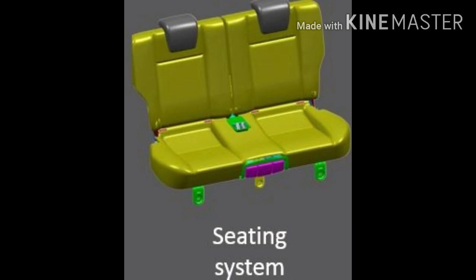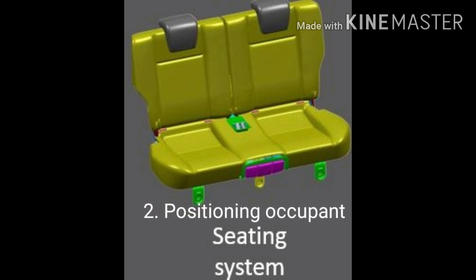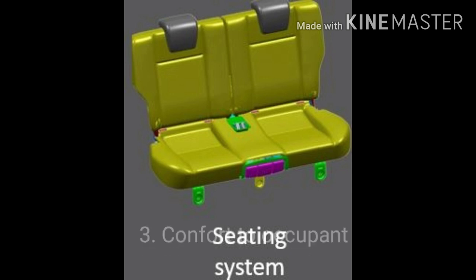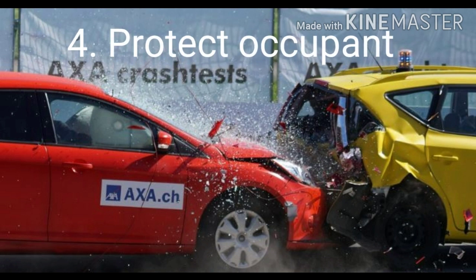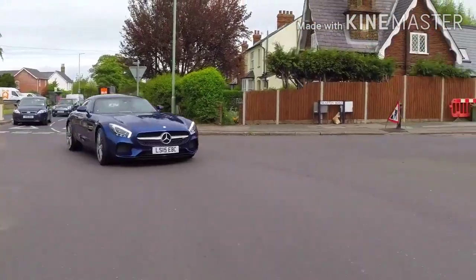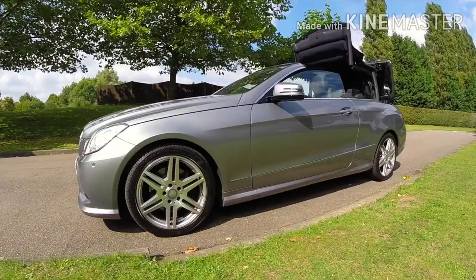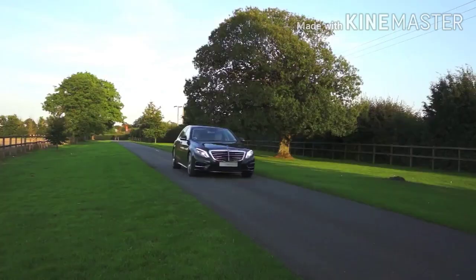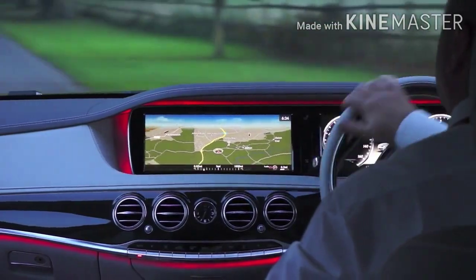The main seat functions are: first, it supports the occupants. Second, seats always play an important role in positioning the occupants in the vehicle. It also provides comfort to the occupant and protects the occupant during accidents. New seat designs offer excellent support, adjustment, and features such as air suspension, heating, sensor detection, 360-degree rotation, remote control, and climate control — keeping the operator comfortable, reducing fatigue and increasing productivity. These are the main functions of seats.